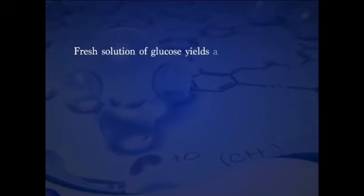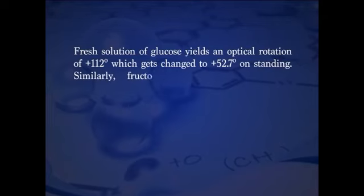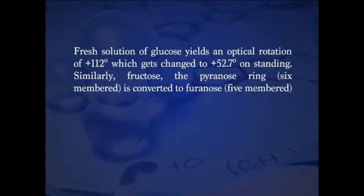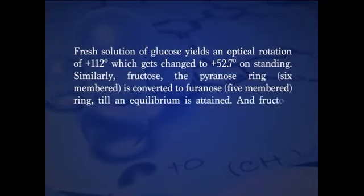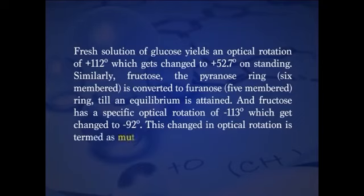Carbohydrates isolated from living systems are not pure compounds, but a mixture of several isomers. The optical rotation may undergo a change due to interconversion of isomers. A fresh solution of glucose yields an optical rotation of +112 degrees, which changes to +52.7 degrees on standing. Similarly, fructose in the pyranose ring (6-member ring) is converted to the furanose form (5-member ring) until an equilibrium is attained. Fructose has a specific rotation of -113 degrees, which changes to -92 degrees. This change in optical rotation is termed mutarotation.